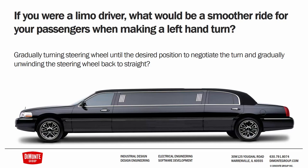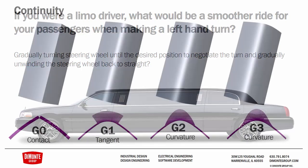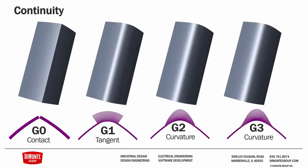We don't want to be jerking the steering wheel if we were that professional limo driver, and likewise, we don't want to have jerky movements with our curves and our surfaces. And what this leads to is the quality of the reflections. You see in this black limo, there's a high-quality light line coming between the dark gray and the black right through the middle of the car.